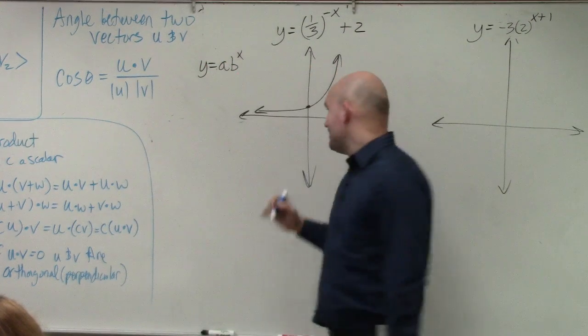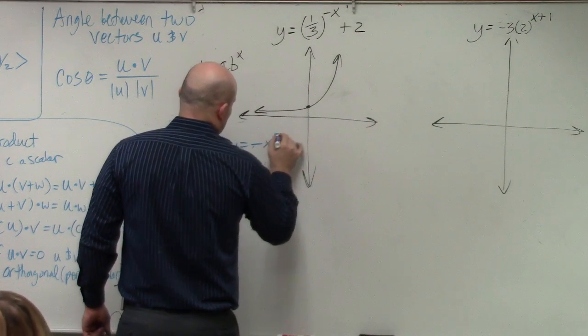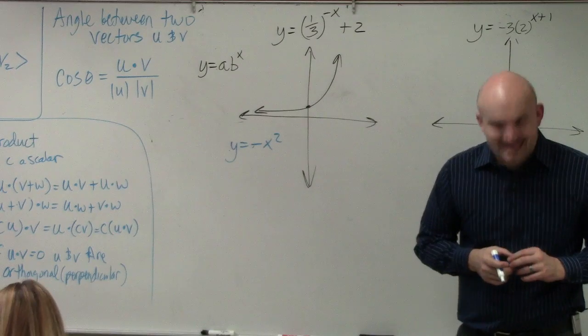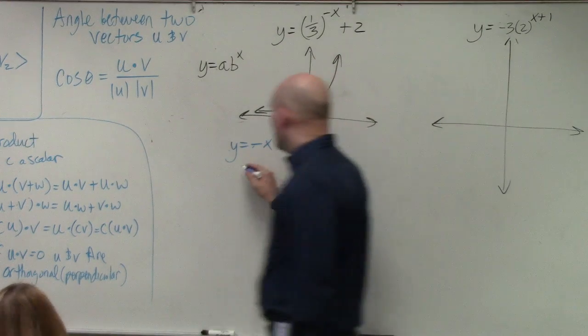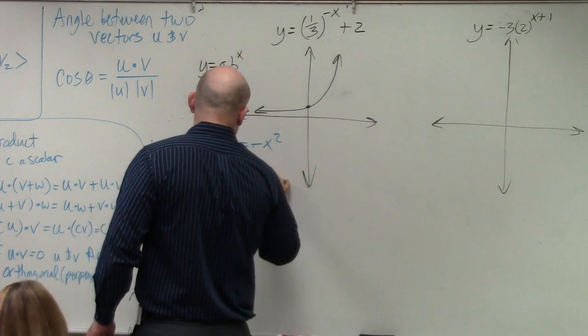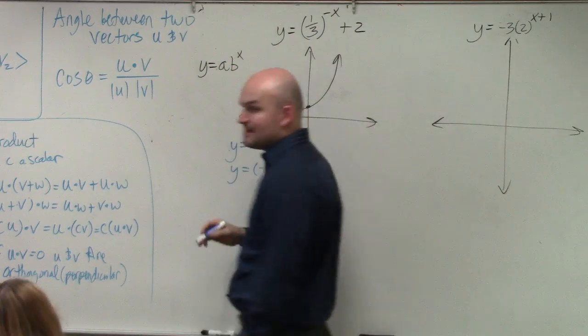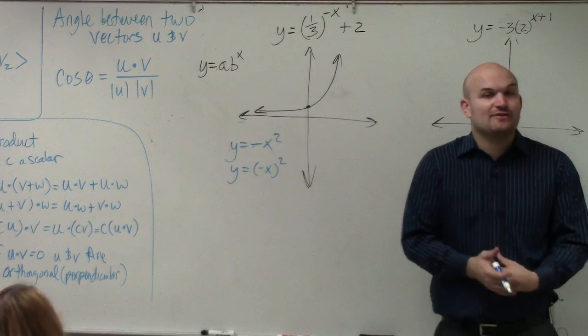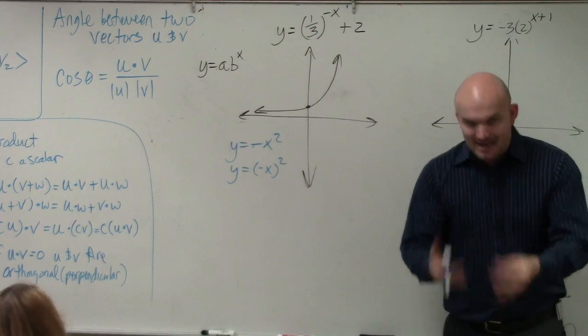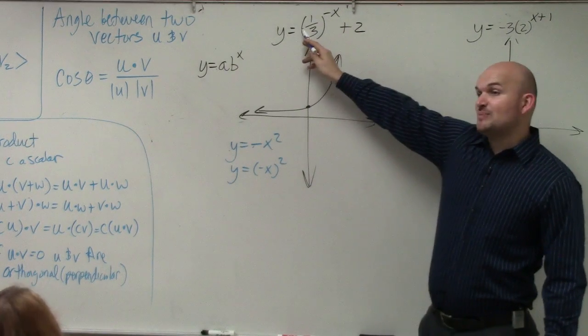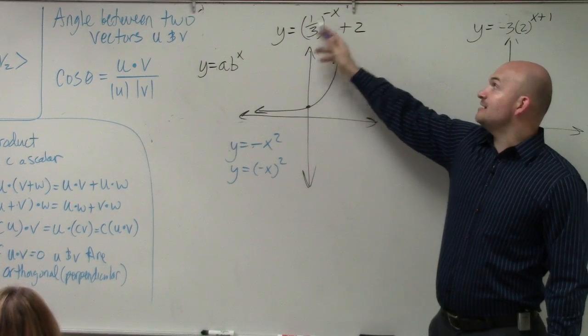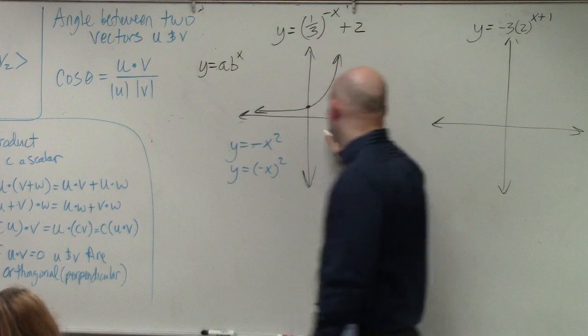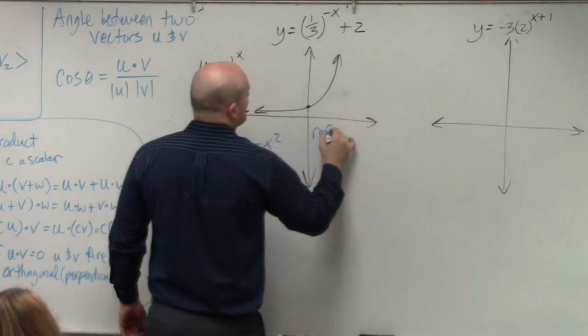Now, if you guys remember, if we had y equals negative x squared, what did that do to the graph? That reflected about the x-axis. So we didn't really talk too much about it because it doesn't matter for a parabola. But if you're multiplying by a negative inside the function, then therefore, that would be a reflection about the y-axis. So I'm not multiplying a negative on the outside of the function. I'm multiplying a negative on the inside of the function. So therefore, this is a reflection about the y-axis.